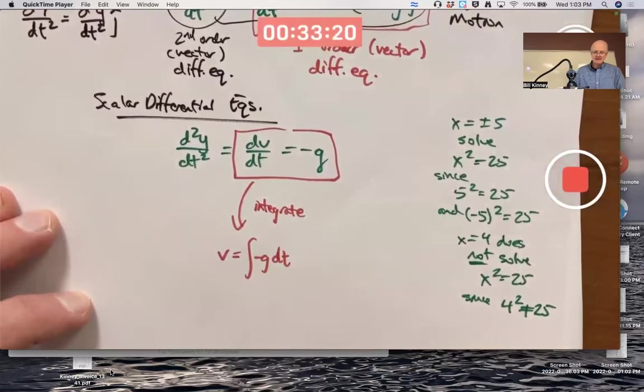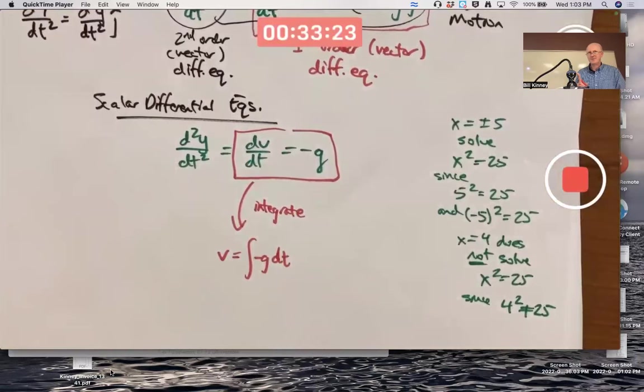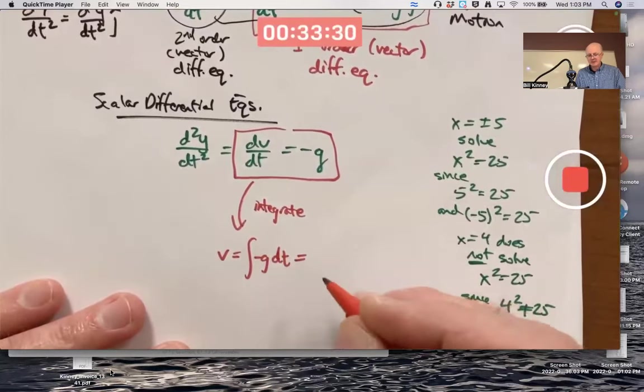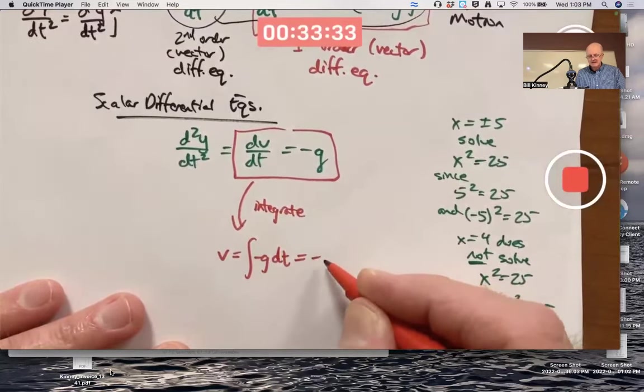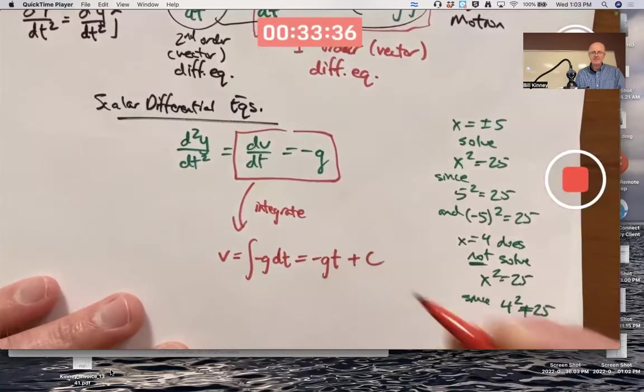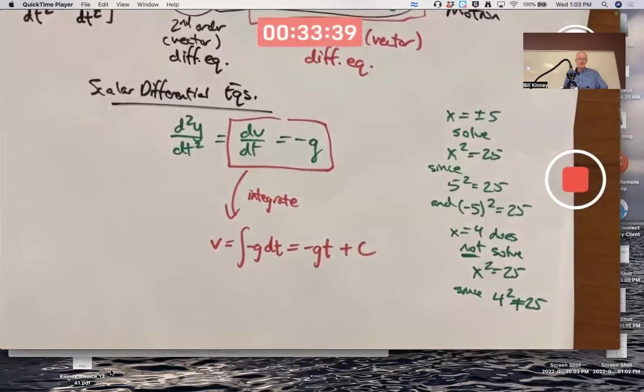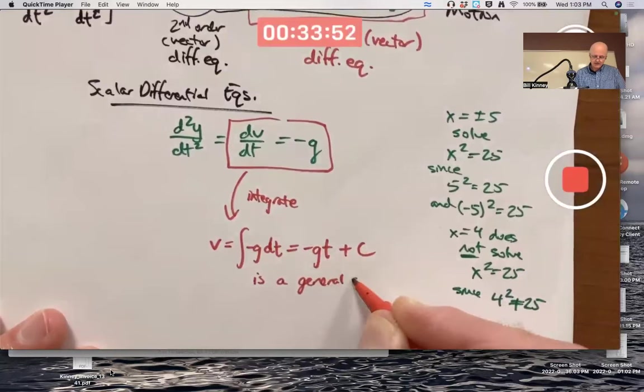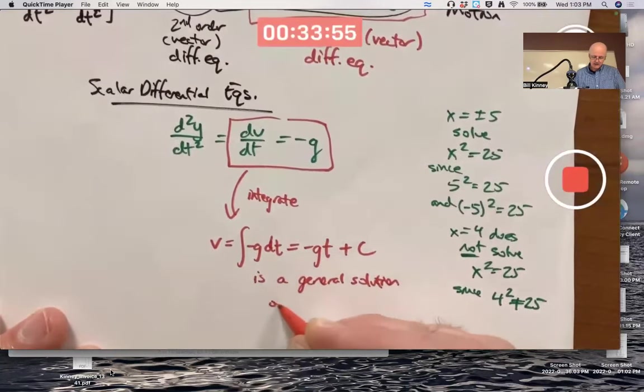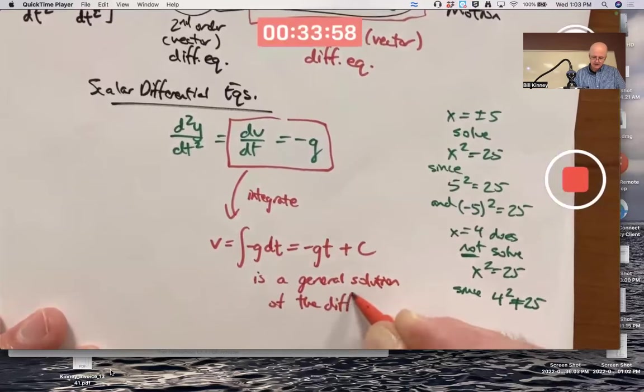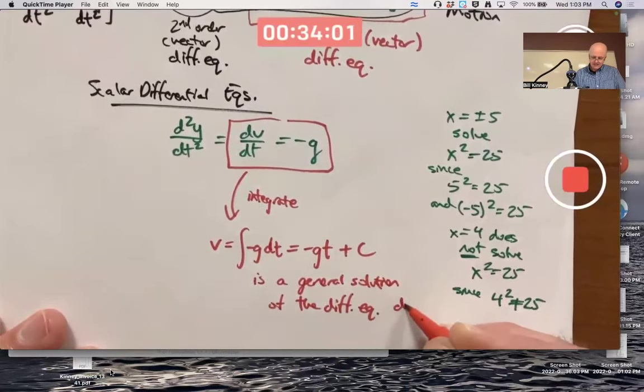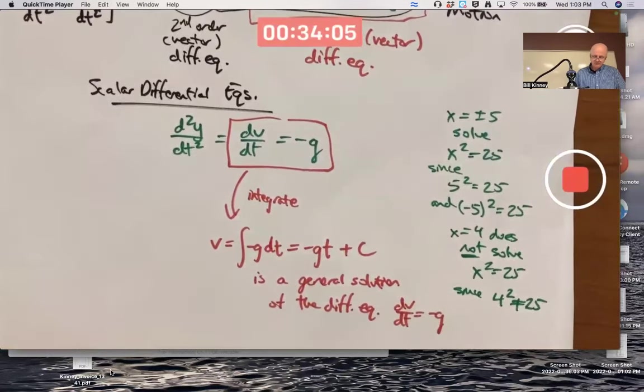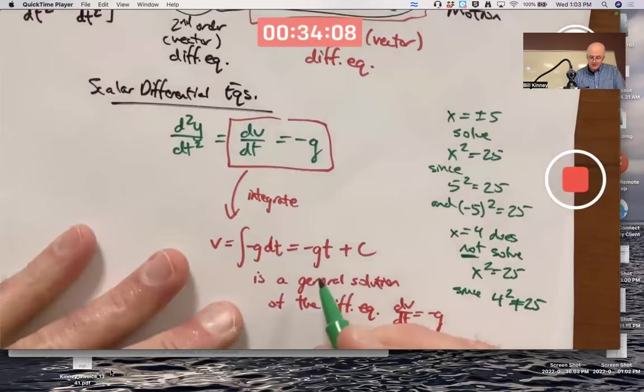It's not always quite so simple though, and that's why the subject is a worthwhile subject in its own right in the non-simple cases. Here in this simple case, we just integrate and get negative GT plus C. This is a general solution of the differential equation dV/dT equals negative G. The G is a specific constant. It has to match the G that's up there. The C is an arbitrary constant. It can be anything.